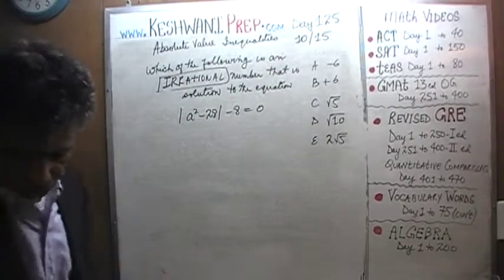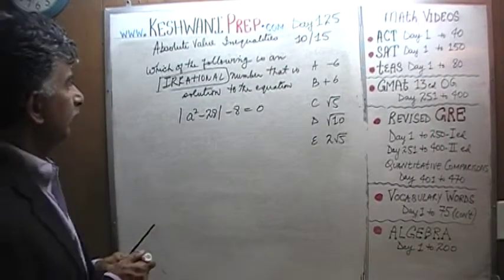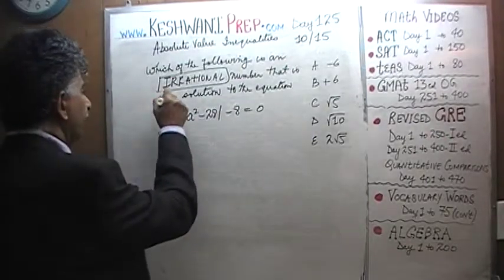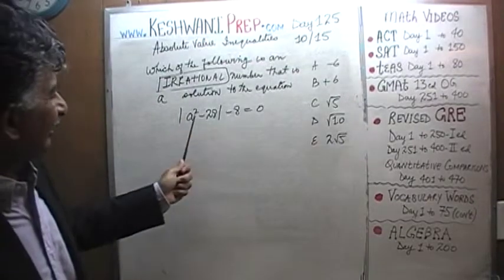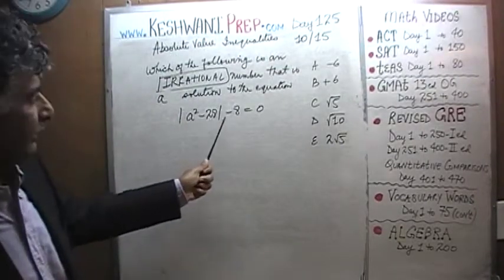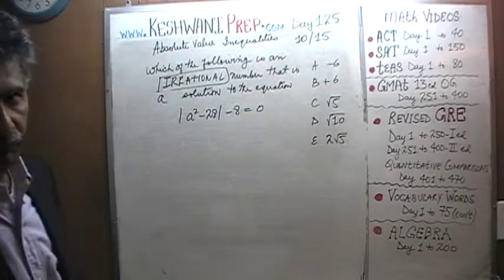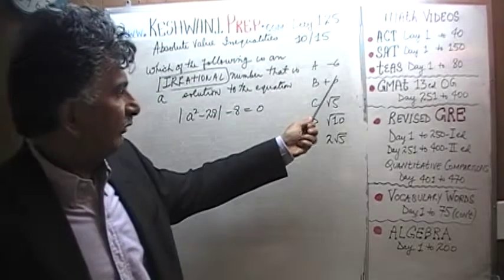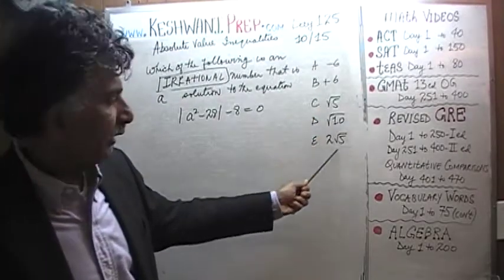That is the solution to the equation a squared minus 28 minus 8 equals 0. And the answer choices are negative 6, positive 6, root 5, root 10, and 2 root 5.